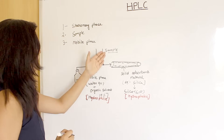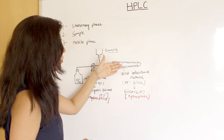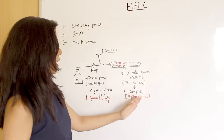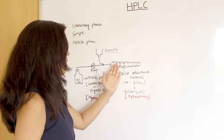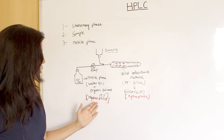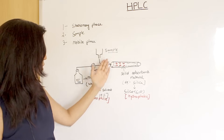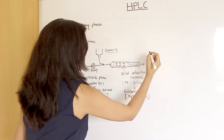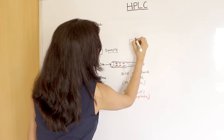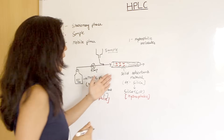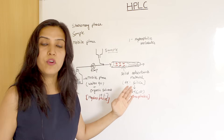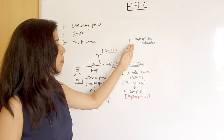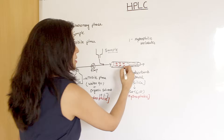The sample is mixed with the mobile phase and passed through the column. Because the nature of the column is hydrophobic, but the mobile phase is hydrophilic, the hydrophilic components of the sample will mix with the mobile phase and pass out. So the first components to pass out of the column are the hydrophilic molecules, because the stationary phase is hydrophobic and the hydrophilic molecules will not bind to it — they will easily pass out.